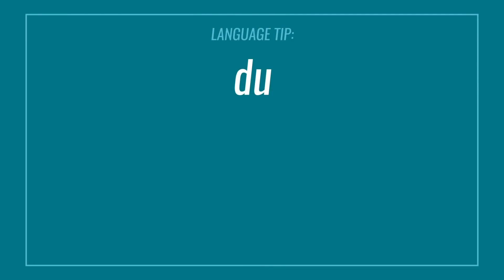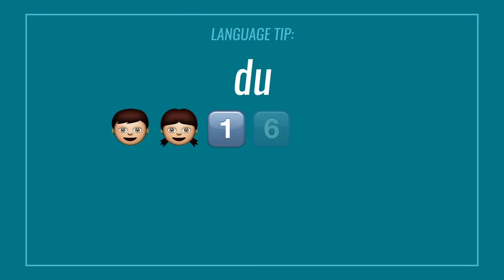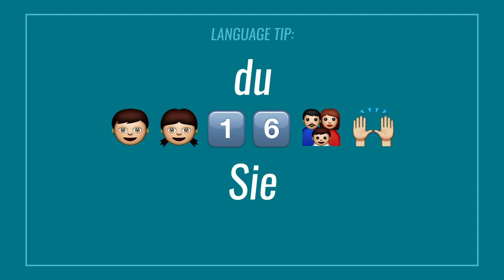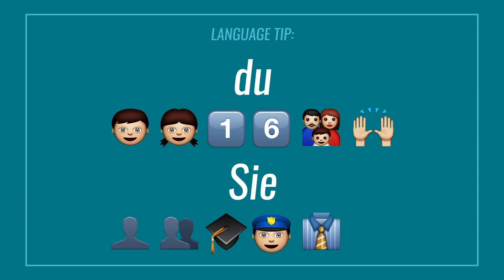Let's go over du and sie first. Du is used to address children and teenagers up to the age of 16, as well as family and friends. Sie is used to address adults you don't know well, in addition to teachers, bosses, colleagues, and everybody you come in contact with as part of a business transaction.